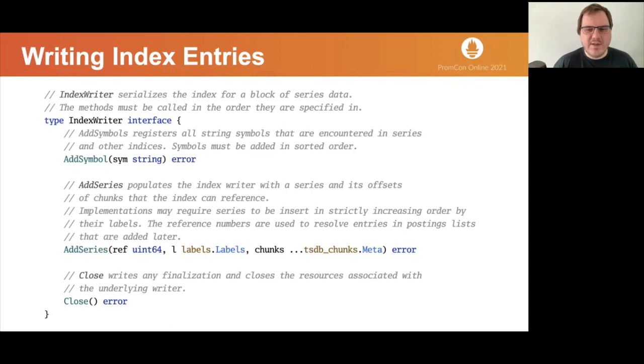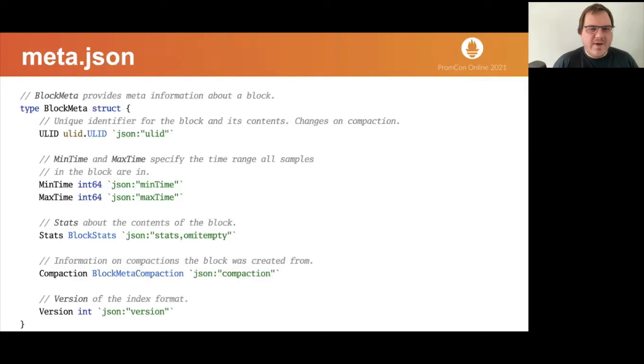After writing chunks and index, we are almost finished with the block. Last piece that is missing is meta.json file. And this file is represented by block meta type from the TSDB library. We need to fill all the fields, and most of them are pretty self-explanatory. Version is currently one. Unfortunately, this constant is not public in the TSDB library. Compaction information must be set as well, and we simply set block source to itself. The failure to do this may confuse compactor. So, after writing meta.json file to disk, we have a complete block that we can use with Prometheus. For Thanos and Cortex, we need extra bit of metadata in the meta.json file, but nothing too complex.